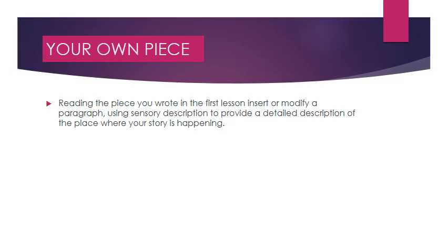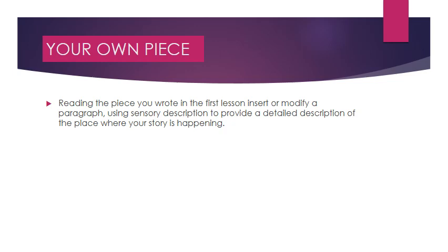Once you've done that activity and written a paragraph, go back to your own piece and check whether you've used sensory description. If you haven't, add it wherever you think it fits best. Generally, the beginning of the piece — the orientation or introduction — is a really good place to add those senses to make it more descriptive and more interesting to read.